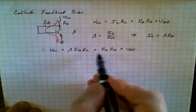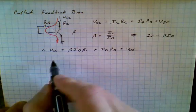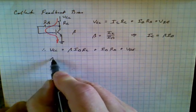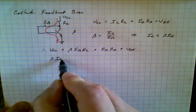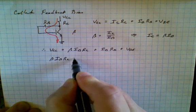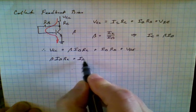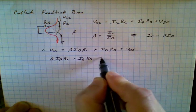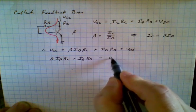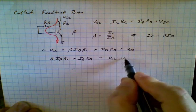So now we're going to try and bring the Ib terms over to one side. So we'll just rearrange the expression. So we have beta Ib Rc plus Ib Rb is equal to Vcc minus Vbe.